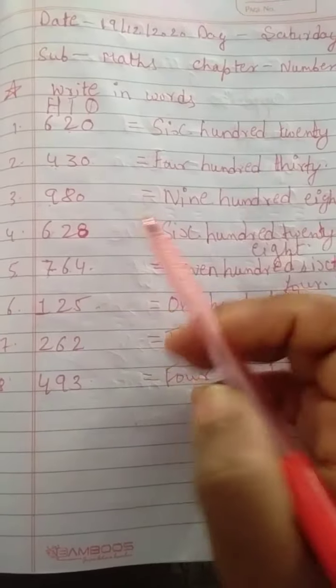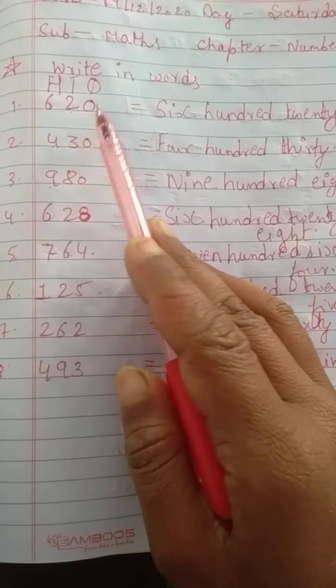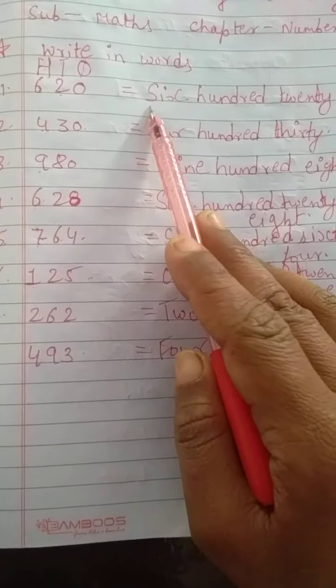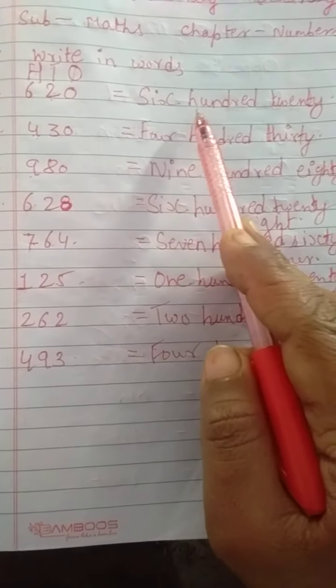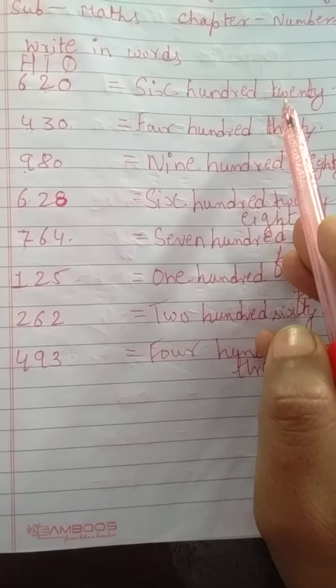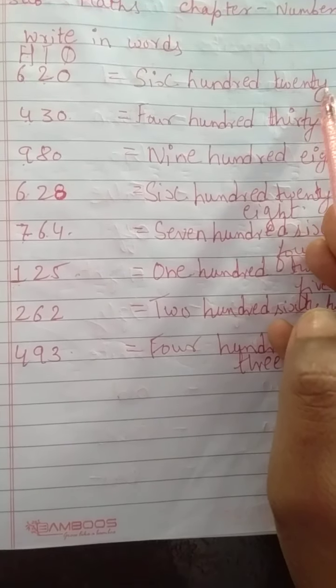So, we have to revise once again. First is 620. S-I-X 6 H-U-N-D-R-E-D hundred 20. T-W-E-N-T-Y 20.